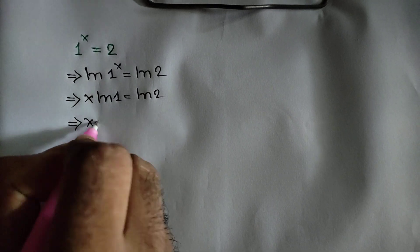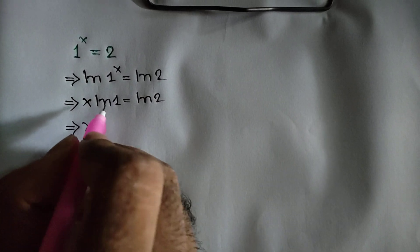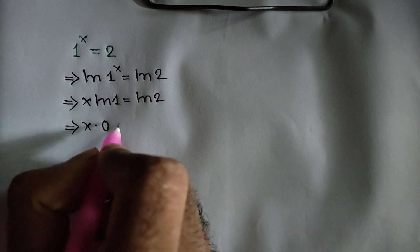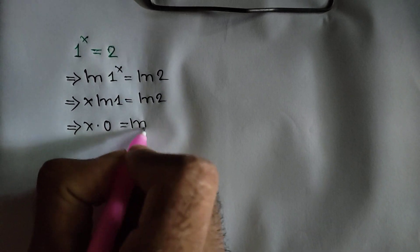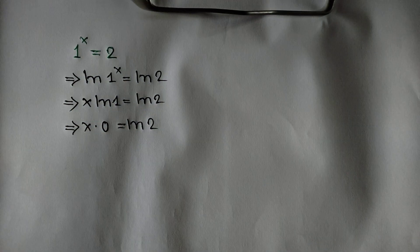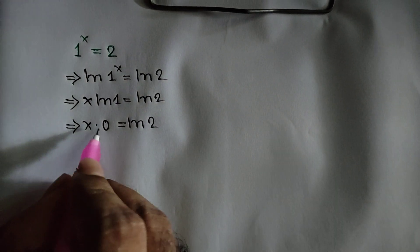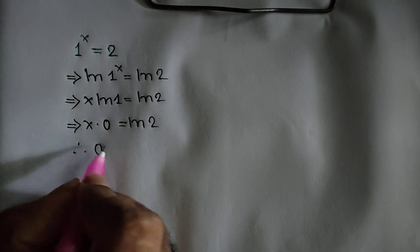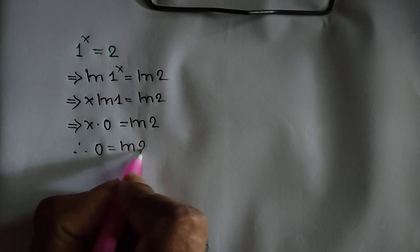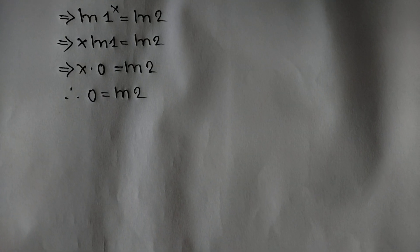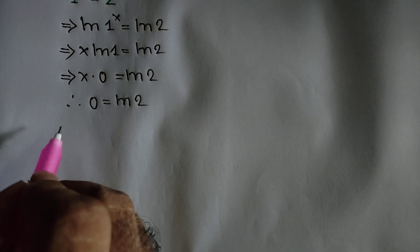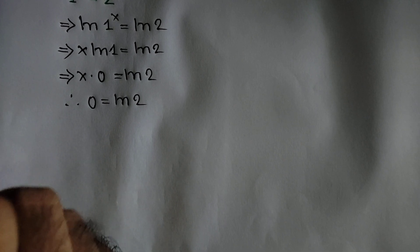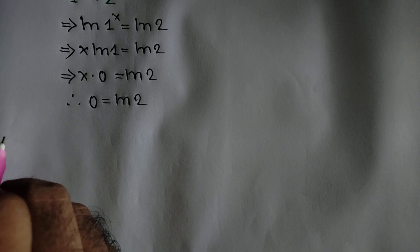The value of ln of 1 is 0, so x times 0 is equal to ln of 2. But x times 0 is equal to 0, so we get 0 is equal to ln of 2. Note that the value of ln of 2 is not equal to 0, so there is no real solution to this equation.